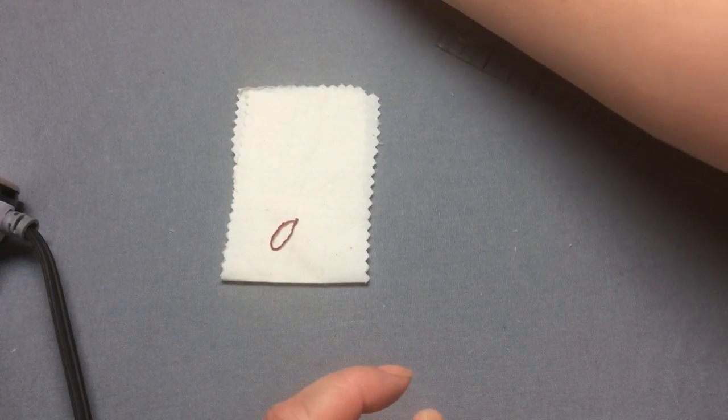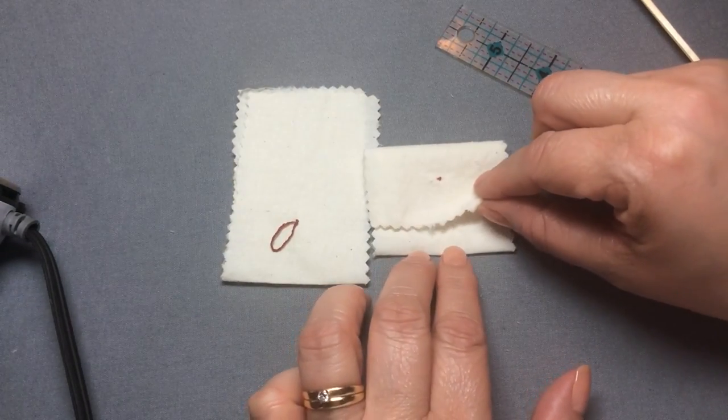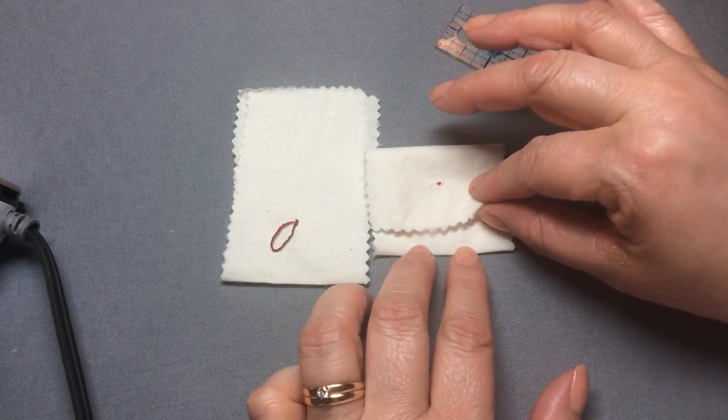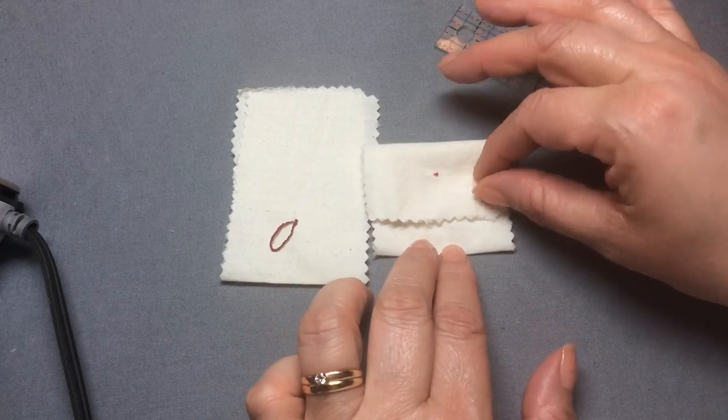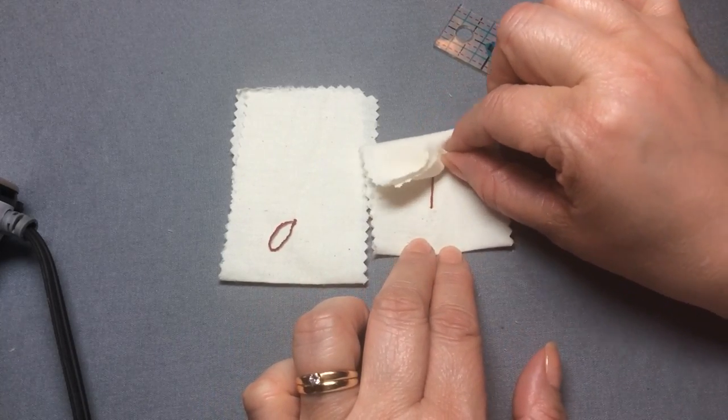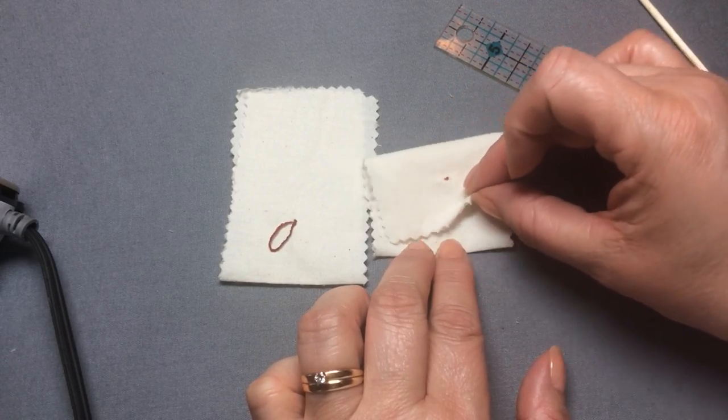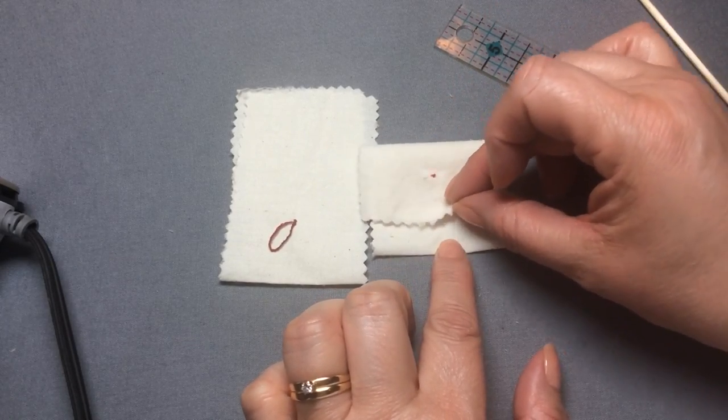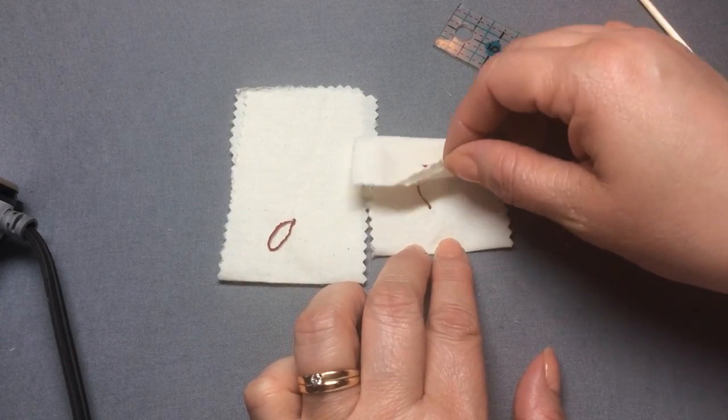Now I also want to show you about the swing tack. Swing tack is used when you want to keep two layers in place. For example, this is a lining of a skirt and this is the outside of the skirt. But I don't want my lining to roll up the dress. So I may put a swing tack in it to allow it to have some moving ease, but it doesn't go away from the place that I wanted.